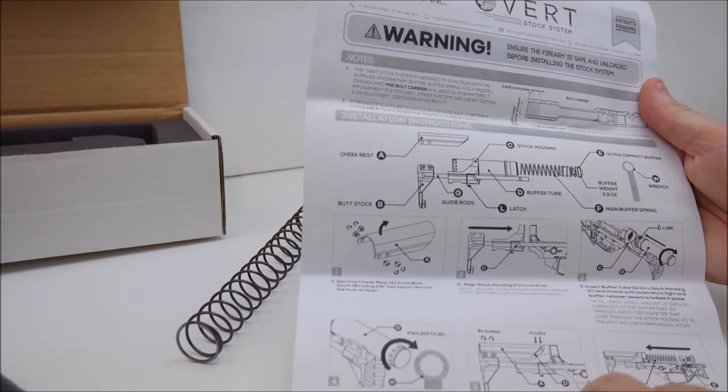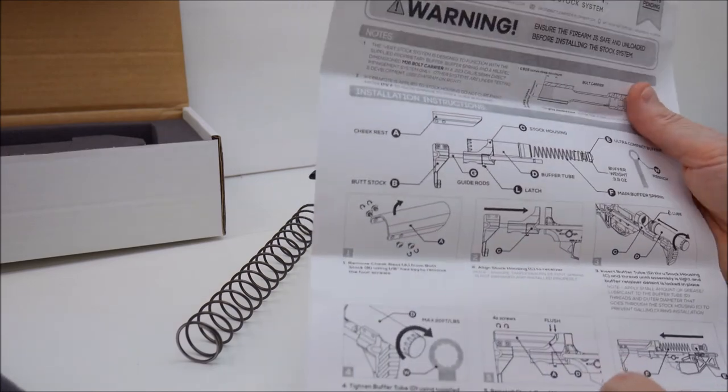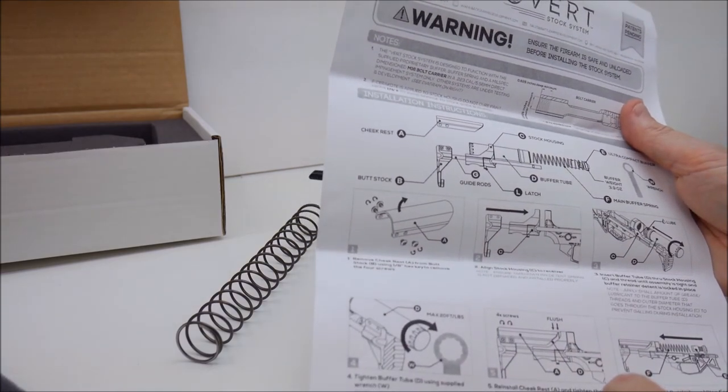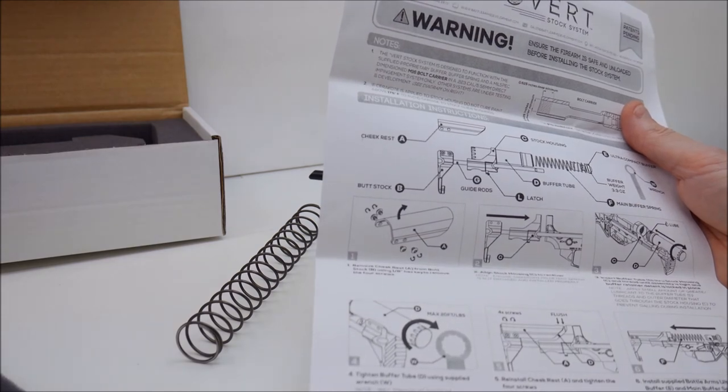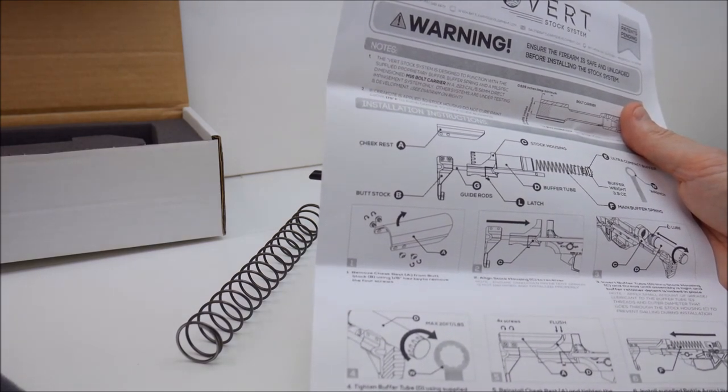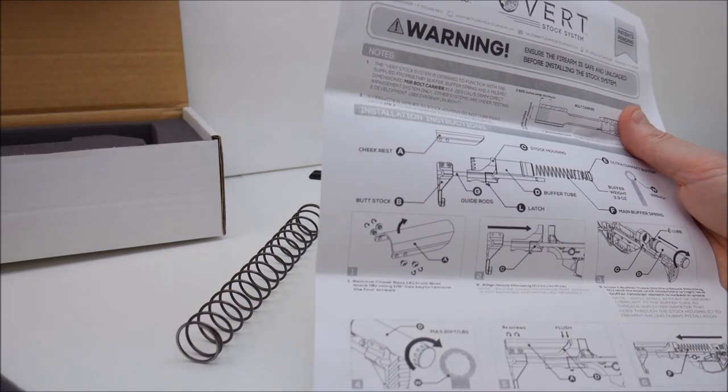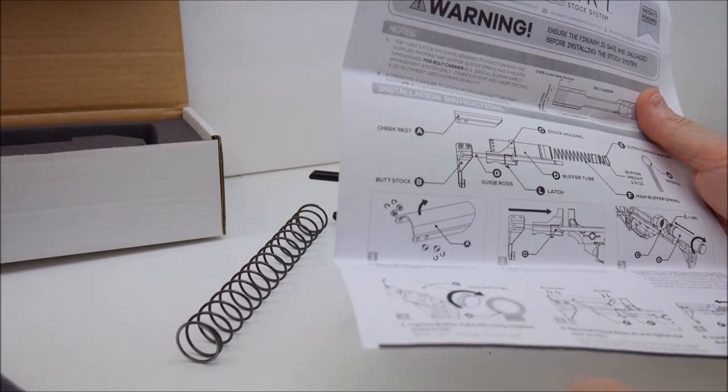Actually they do say grease. They don't make any mention of what the appropriate type of grease should be. Tighten the buffer tube down using supplied wrench. It's interesting that the max torque spec is listed at 20 foot pounds. You're supposed to tighten it by hand and how do you know it's at 24 pounds of torque if you tighten it by hand?